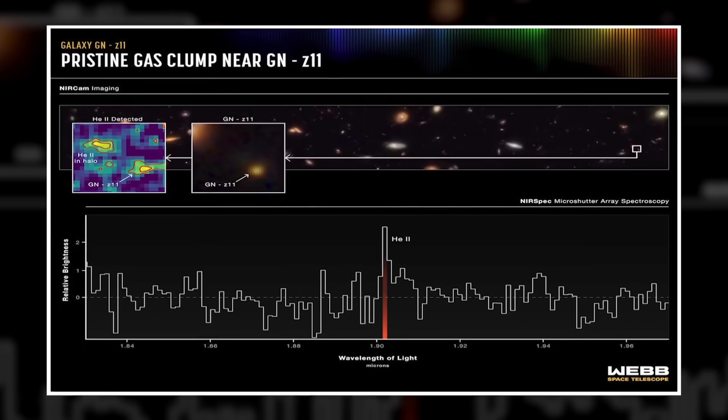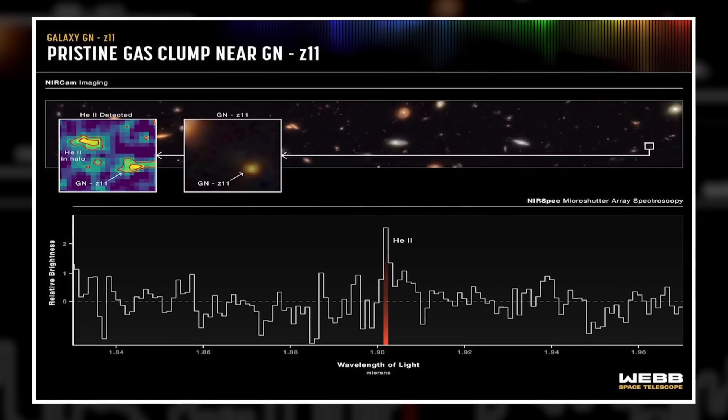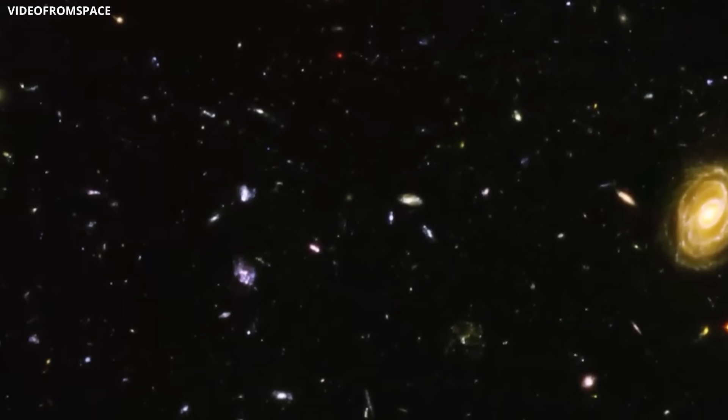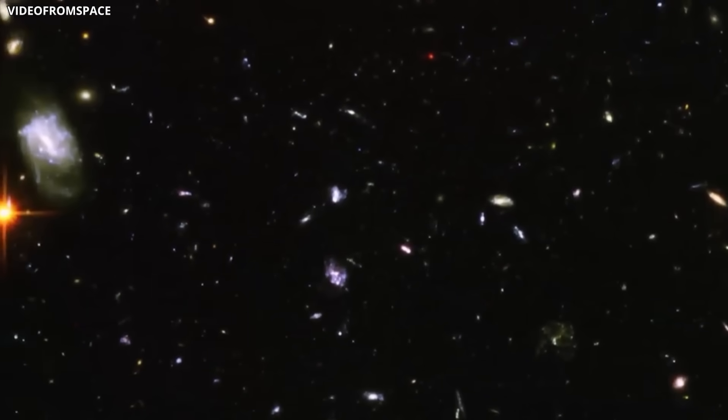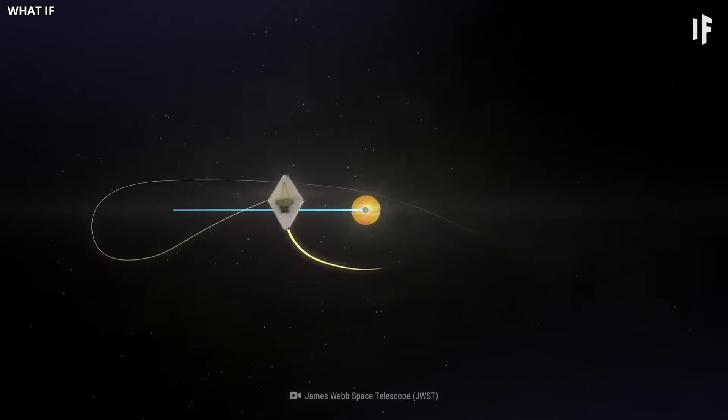If GNZ 11 wasn't alone, and other galaxies just like it, bright, massive, and early, were showing up, it meant something might be seriously wrong with our current understanding of how galaxies form and evolve.